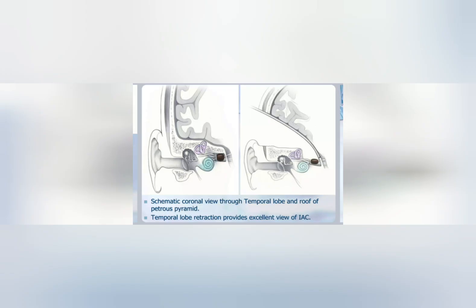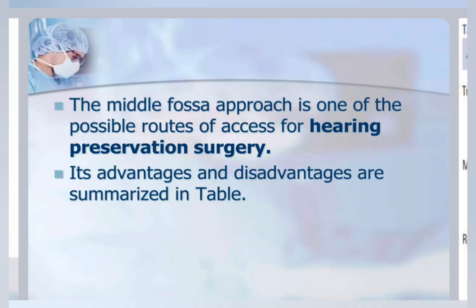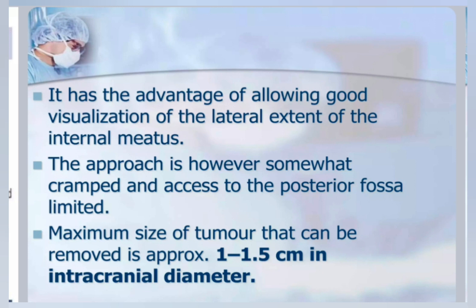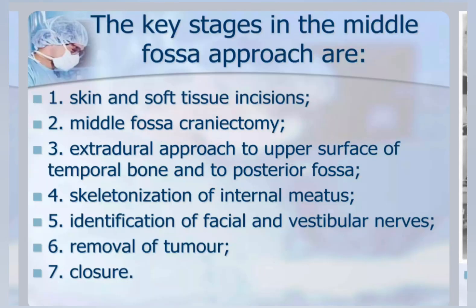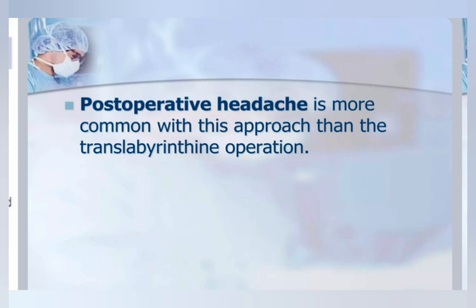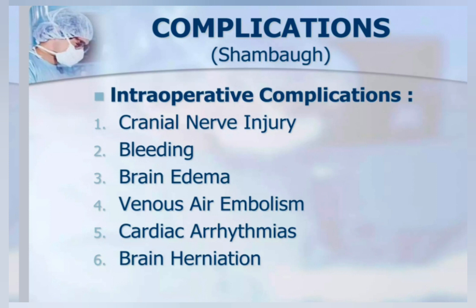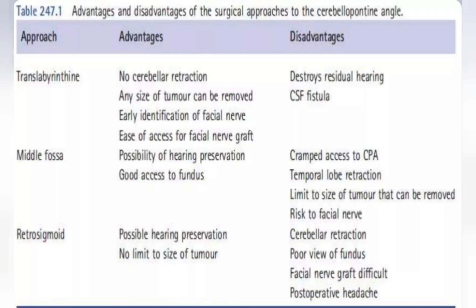The middle fossa approach is usually done by neurosurgeons and is good for small tumours in the internal auditory canal when you want to preserve hearing — it is a hearing preservation surgery. The disadvantage is temporal lobe retraction, which sometimes leads to epilepsy. The retrosigmoid approach is associated with post-operative headache and is good for larger cisternal tumours. Each approach has its own advantages and disadvantages, and the choice depends on tumour size, hearing status, and patient factors.